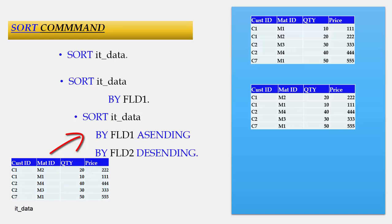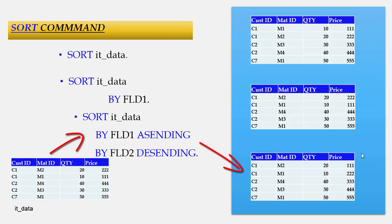Lastly, sorting the internal table BY field1 ASCENDING field2 DESCENDING means customer ID is sorted in ascending fashion and material ID in descending fashion. For example, C1, C2, and C7 appear in ascending order. For C1, M1 and M2 — since M2 is of higher value it is placed above M1. Similarly for C2, M3 and M4 — M4 is of higher value so it is placed first. This is how customer ID sorts ascending and material ID sorts descending.